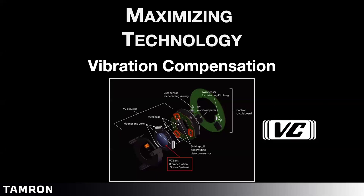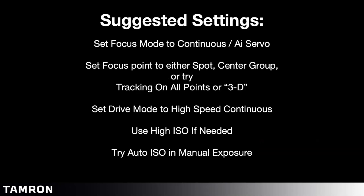Tamron calls its stabilization Vibration Compensation. Mirrorless bodies tend to have in-body stabilization, so many of our newest mirrorless lenses don't include stabilization built into the lens. But for lenses that do have it, it allows you to shoot at lower shutter speeds than you could handheld with a non-stabilized lens — like getting a sharp shot at 1/40th of a second handheld on the 150-600mm because of stabilization technology.